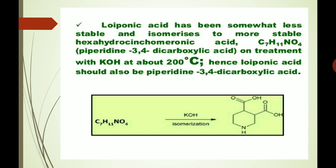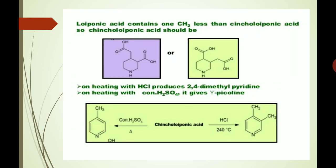Hence, luponic acid should also be piperidine-3,4-dicarboxylic acid. As we can see, in the presence of KOH it isomerizes into a more stable form. Luponic acid contains one CH2 less than syncholopinic acid, so syncholopinic acid should be either structure 1 or structure 2. On heating with HCl, it produces 2,4-dimethylpyridine, and on heating with concentrated sulfuric acid, it gives gamma-picoline, as shown in this reaction.